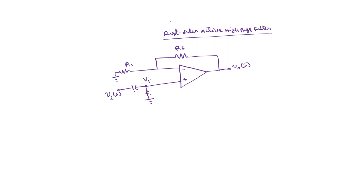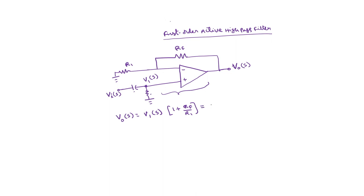Let us assume this node is V1(s). The input is Vi(s) and output is Vo(s). If I know V1(s), then the output is simply from a non-inverting amplifier: Vo(s) = V1(s) × (1 + Rf/R1). We define A0 = 1 + Rf/R1 as the closed loop gain, so Vo(s) = A0 × V1(s).